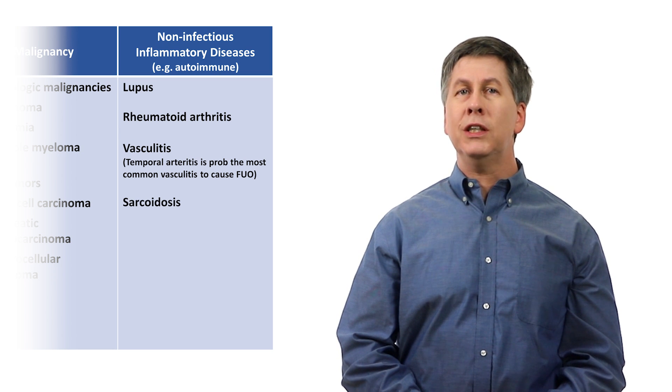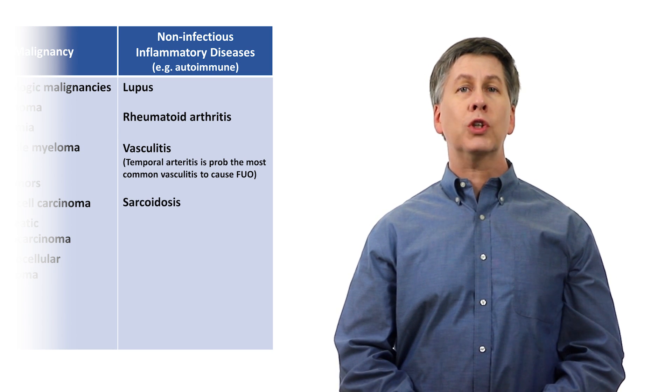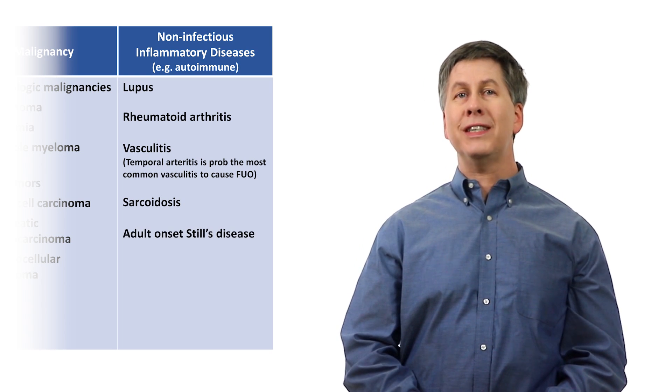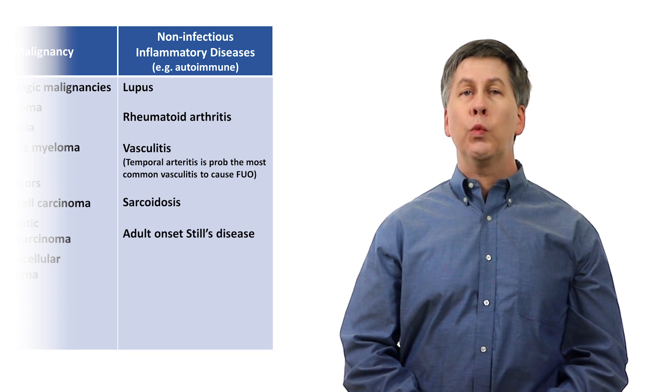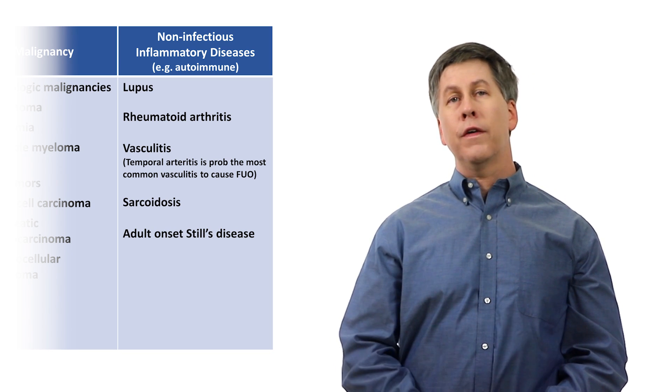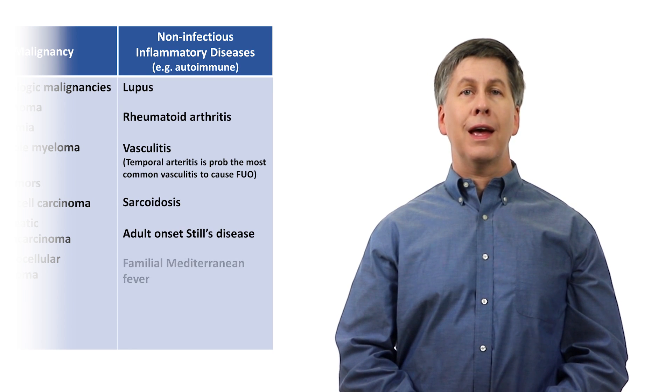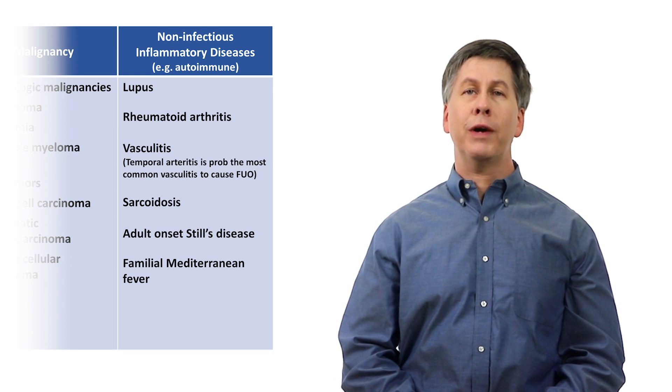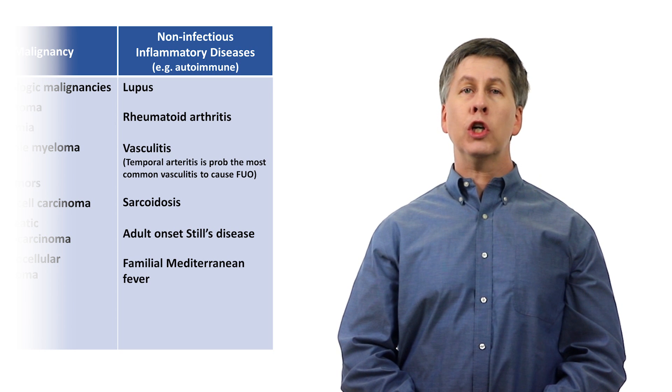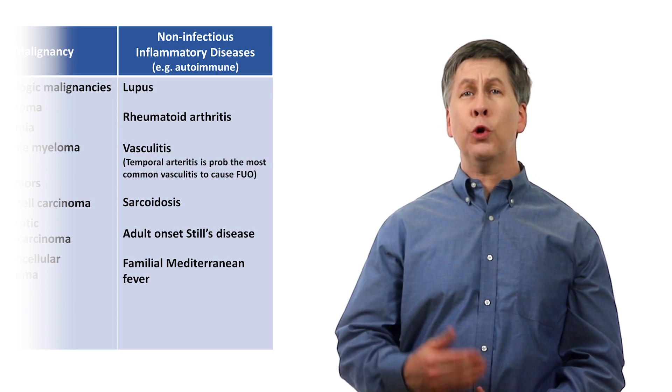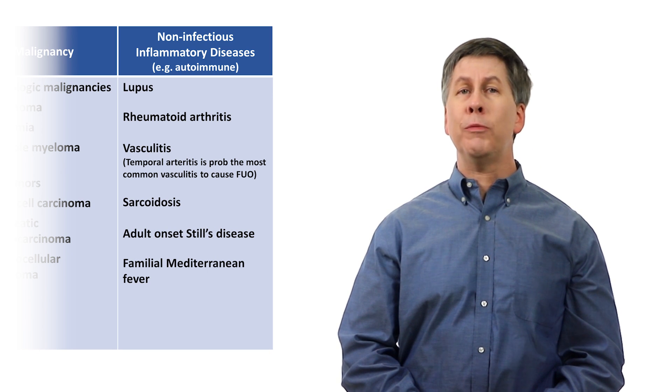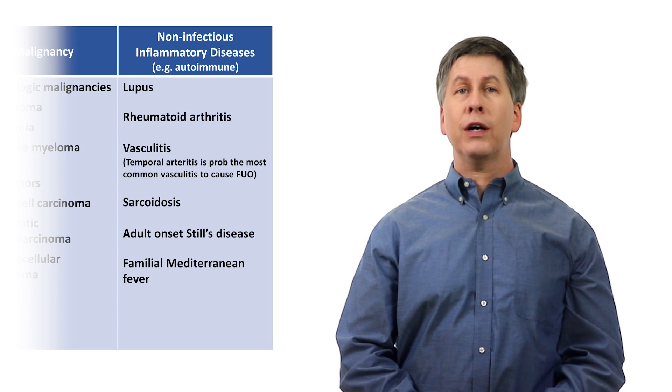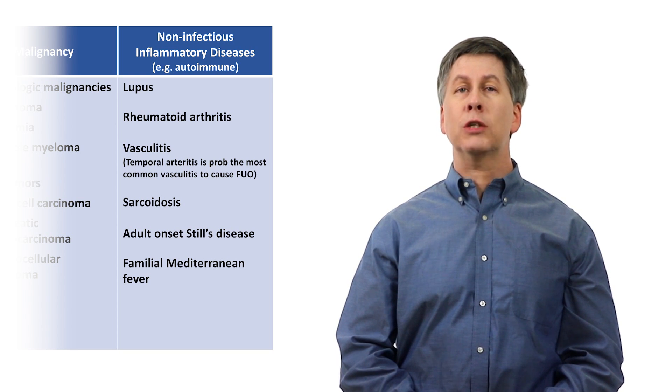Sarcoidosis is a multi-system disease of unclear underlying pathogenesis, which most commonly affects the lungs and lymph nodes. Adult-onset Still's disease is also a disease of unknown pathogenesis, which is characterized by fevers, rash, pharyngitis, and arthralgias. And familial Mediterranean fever is a rare genetic disease predominantly found in individuals of Mediterranean and Middle Eastern ancestry, which is caused by a gain-of-function mutation affecting a protein called pyrin, which plays a role in normal immune function. Its clinical manifestations are recurrent episodes of fever, arthralgia, and chest and abdominal pain caused by serosal inflammation.